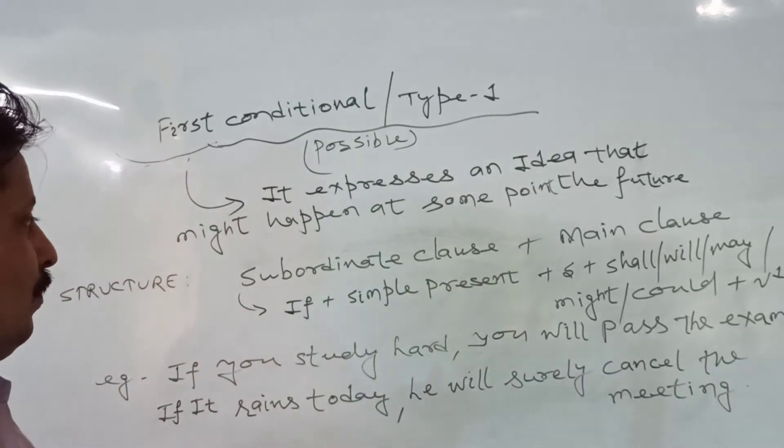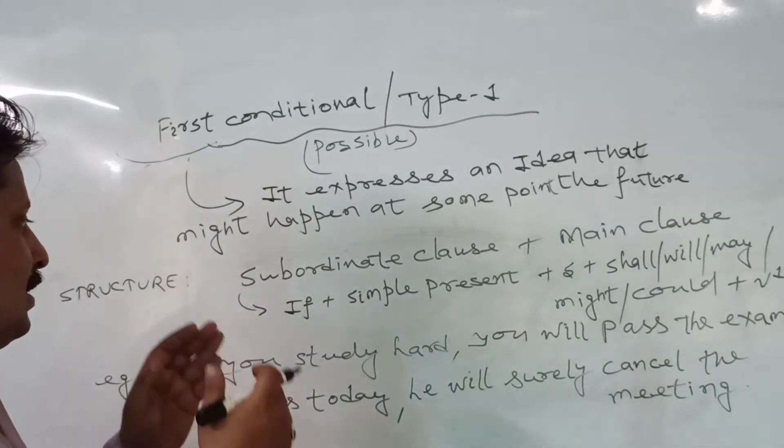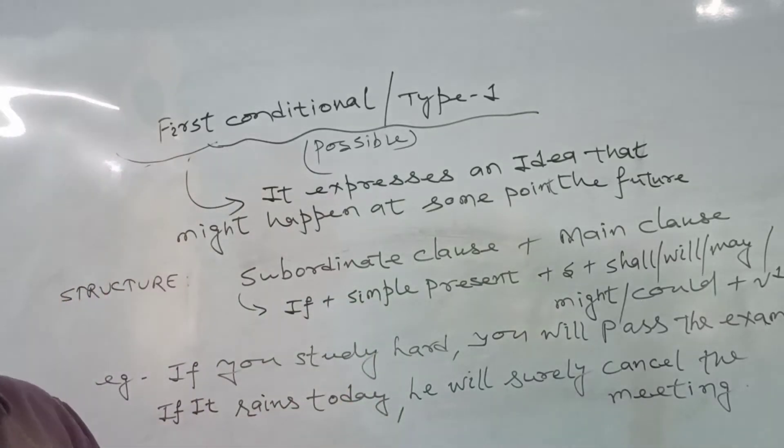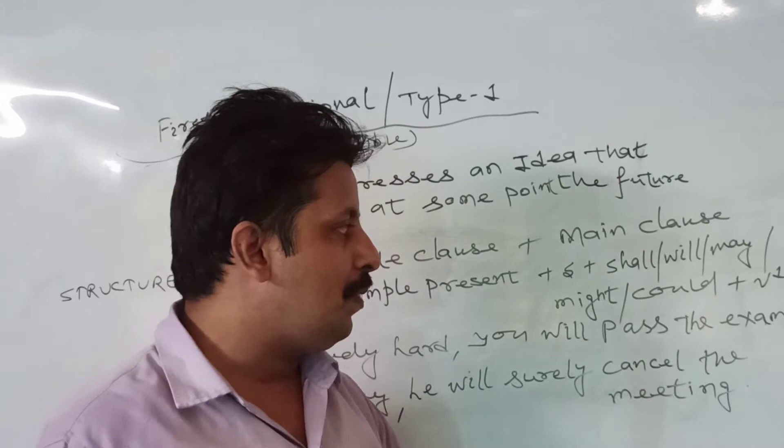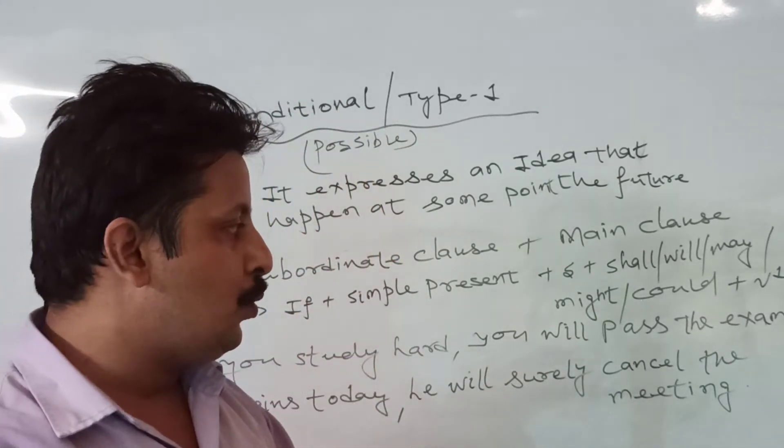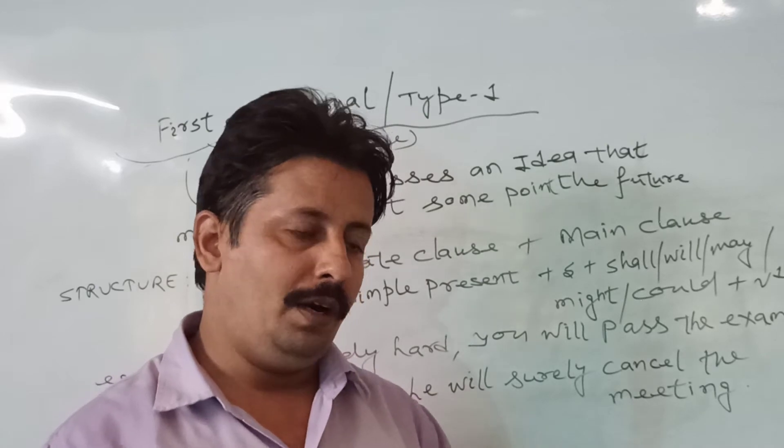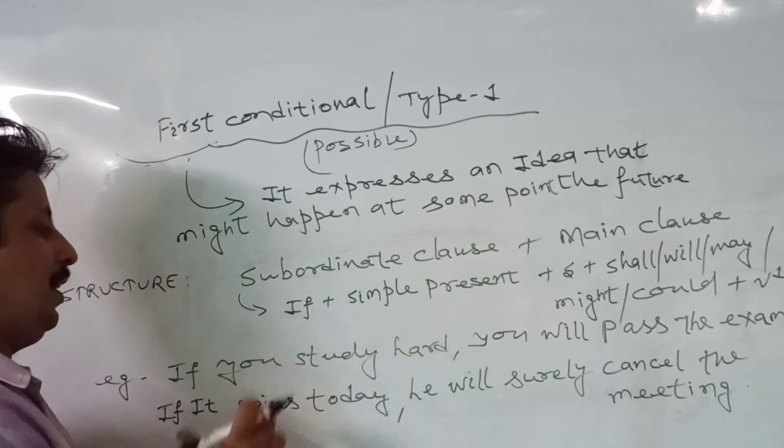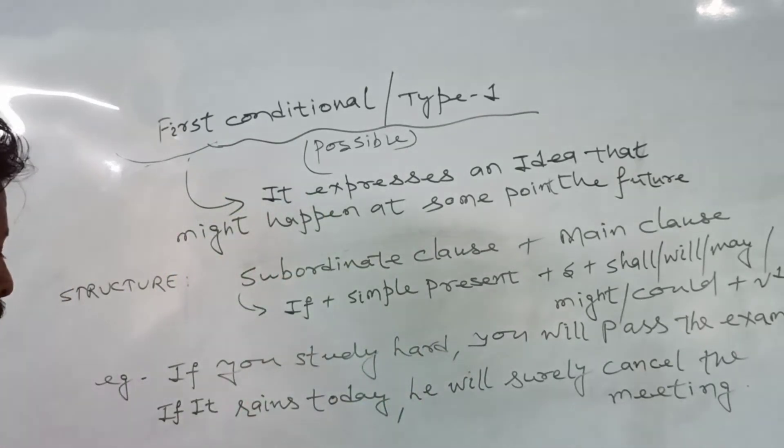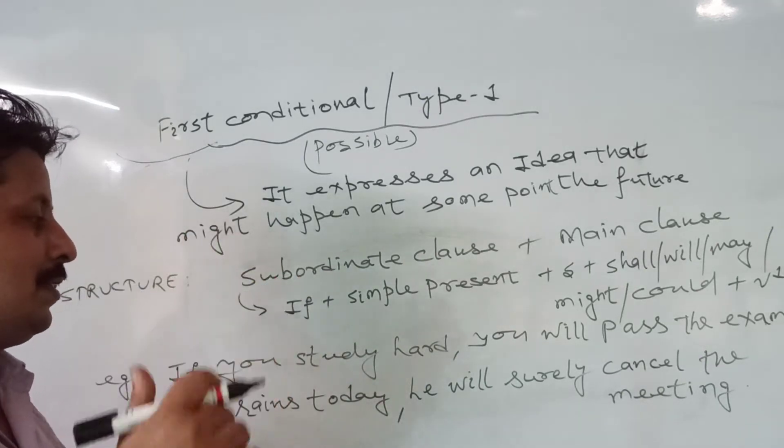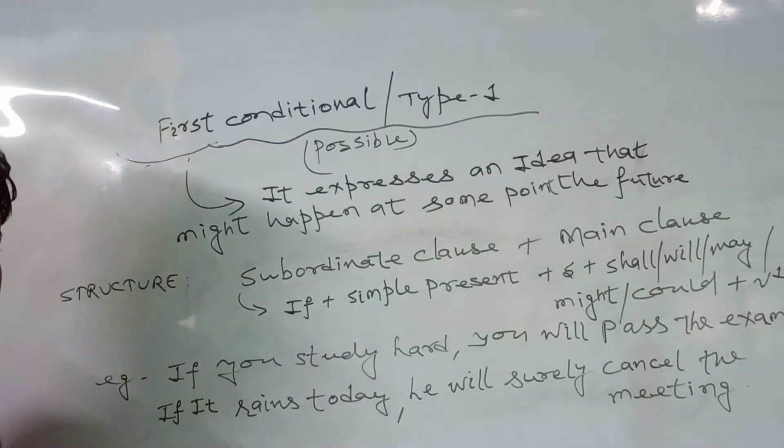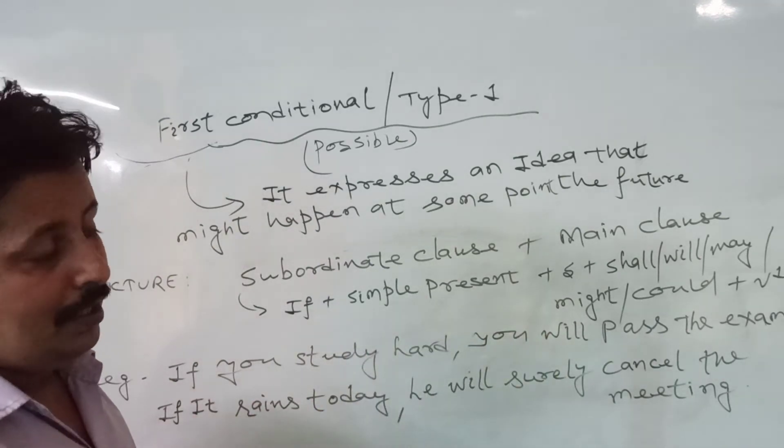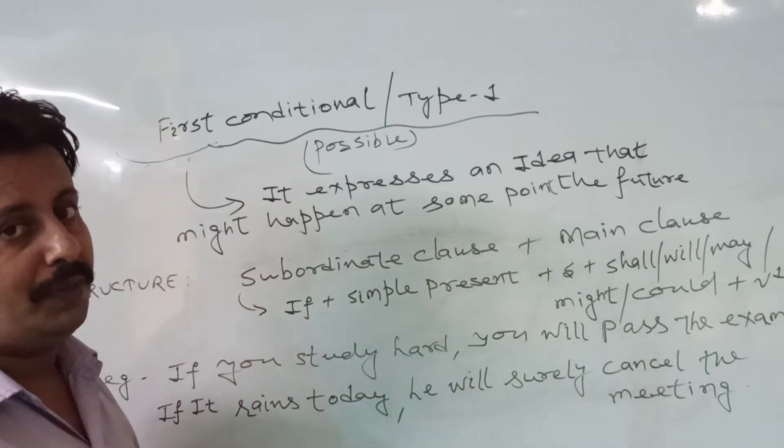By structure you can see the two parts: one subordinate clause and the second main clause. In subordinate clause it will contain if plus simple present, and in the second you will see subject plus shall, will, may, might, could, and then plus verb form. For example, you can see: If you study hard, you will pass the exam. If it rains today, we will cancel the wedding. Here in the first part you see it is simple present, but in the second part that is showing that something will occur in future time.